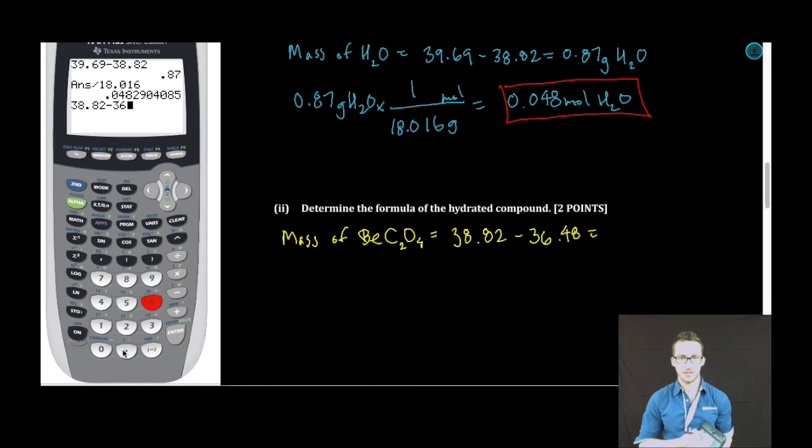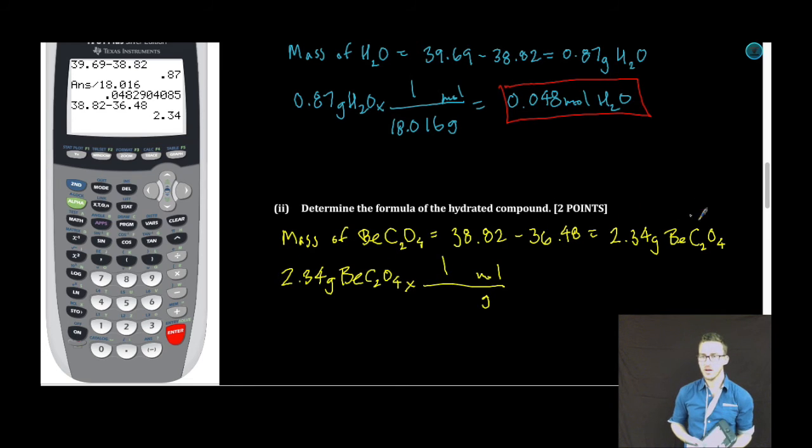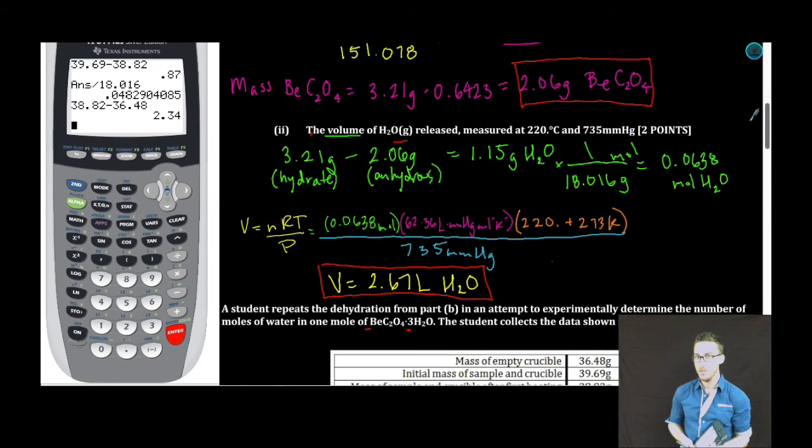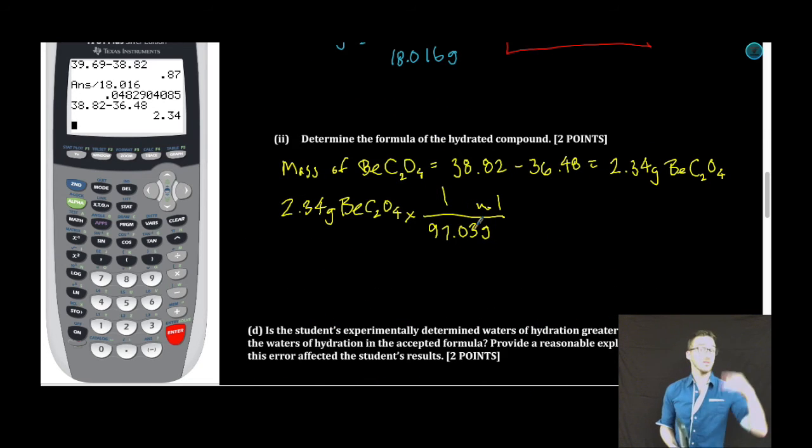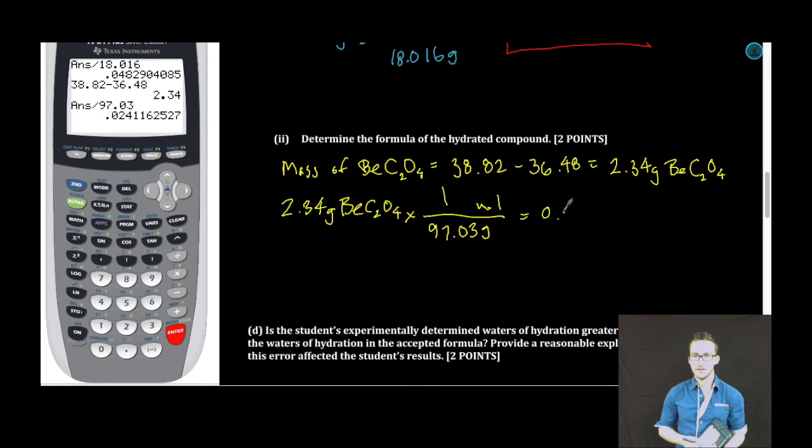38.82 minus 36.48. It gives me 2.34 grams of our anhydrous beryllium oxalate. I'm going to convert that mass to moles, and 1 mole of beryllium oxalate I already know because I calculated it in an earlier step in my problem. It is 97.03 grams per mole. So sometimes the earlier parts of your free response can really help you out. Save yourself some time. So remember, it's all one giant problem. So we divide by the molar mass, 0.024 moles of beryllium oxalate.